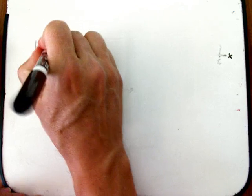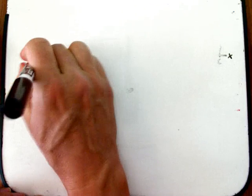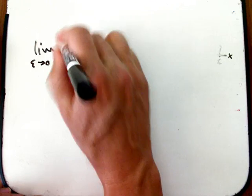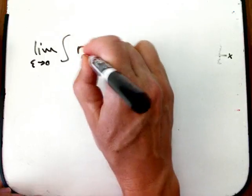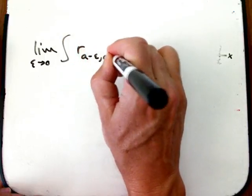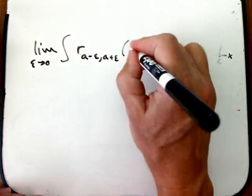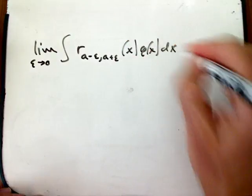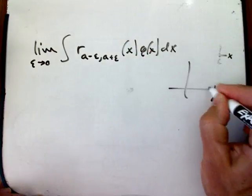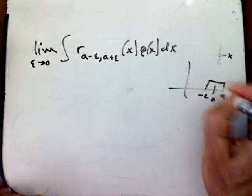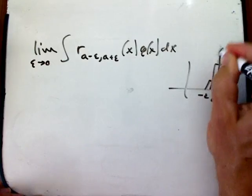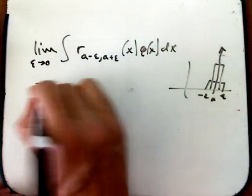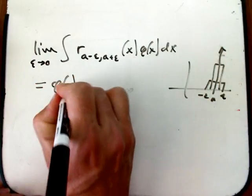So slightly more generally, exactly the same proof tells us that the limit of, if we take, let's say, something based symmetrically around A—so here they're near A and they're getting closer and closer and closer, trying to make a spike at A—then this is just going to be phi of A.